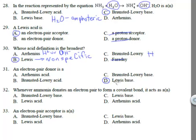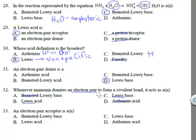An electron pair donor is a Lewis base. Whenever ammonia donates an electron pair to form a covalent bond, it acts as a Lewis base — you're paying attention to electron pairs, not Bronsted-Lowry or Arrhenius definitions. Since it's donating those electrons, it is a Lewis base.